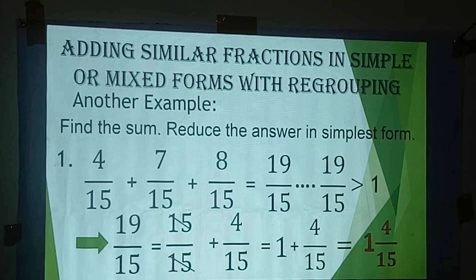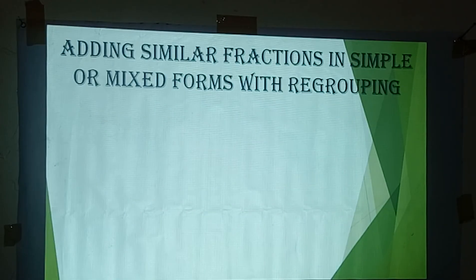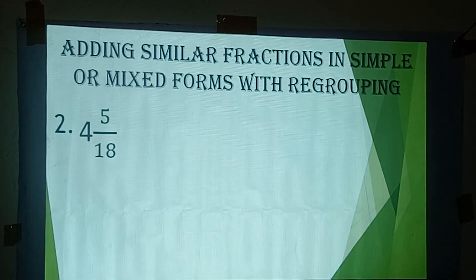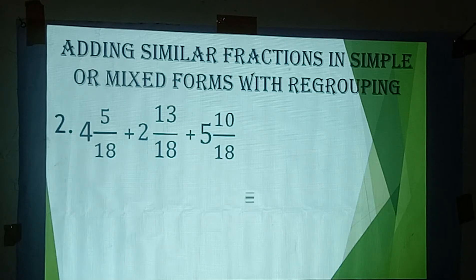Another example: 4 and 5/18 plus 2 and 13/18 plus 5 and 10/18. The three given fractions are in mixed form, so we can add the whole numbers and at the same time add the numerators separately.